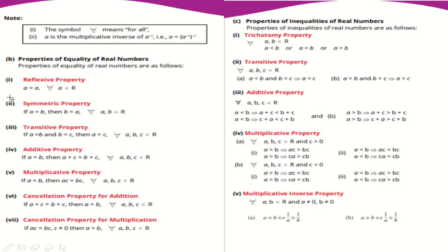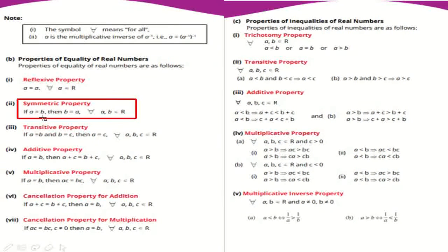Symmetric Property: اگر a equal ہے b کے، تو b بھی equal ہوگا a کے۔ یعنی اگر پہلا number دوسرے کے equal ہے تو دوسرا بھی پہلے کے equal ہوگا — a = b implies b = a۔ یہ Symmetric Property ہے۔